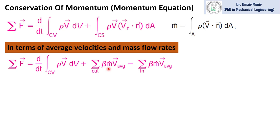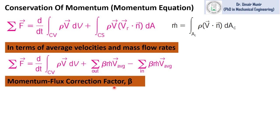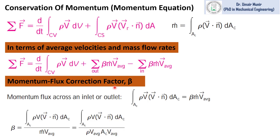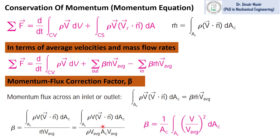In this equation, beta is the momentum flux correction factor, and we can evaluate its value using this equation, which is the momentum crossing an inlet or outlet. This comes from the momentum equation — the momentum flux crossing an inlet or outlet is replaced with beta times m-dot times v. So we have this equation, and if we want to evaluate the value of beta, we divide by m-dot times v-average. Simplifying this gives us the beta equation in its final form.